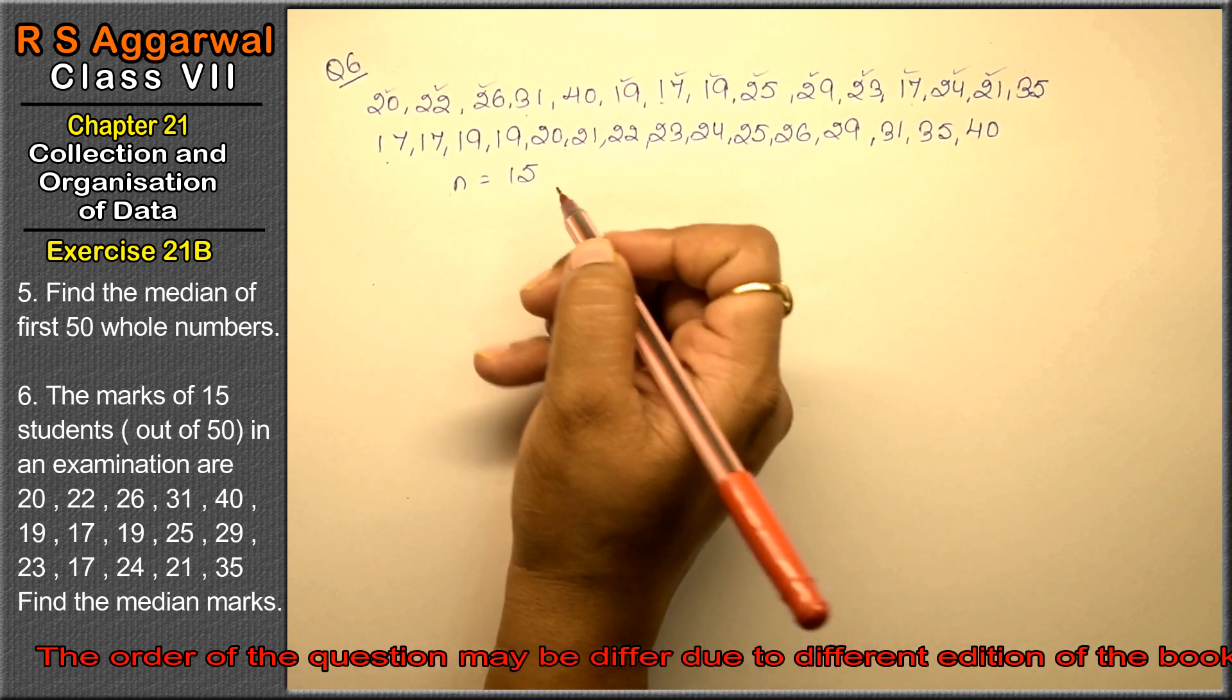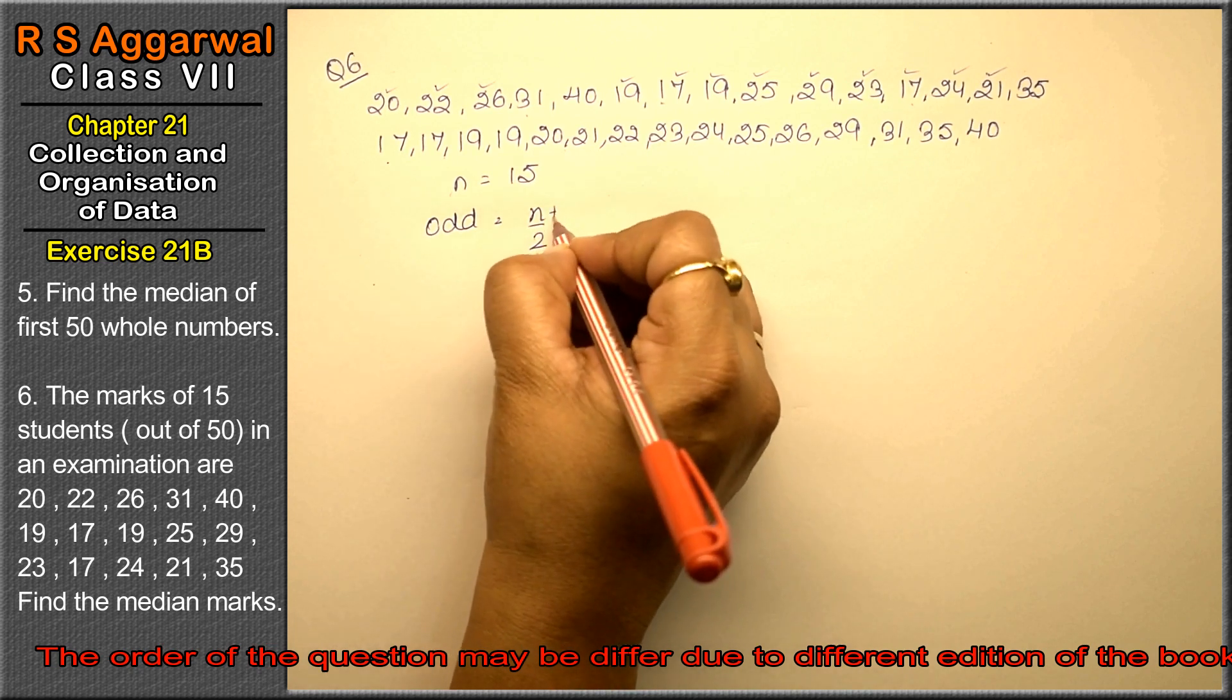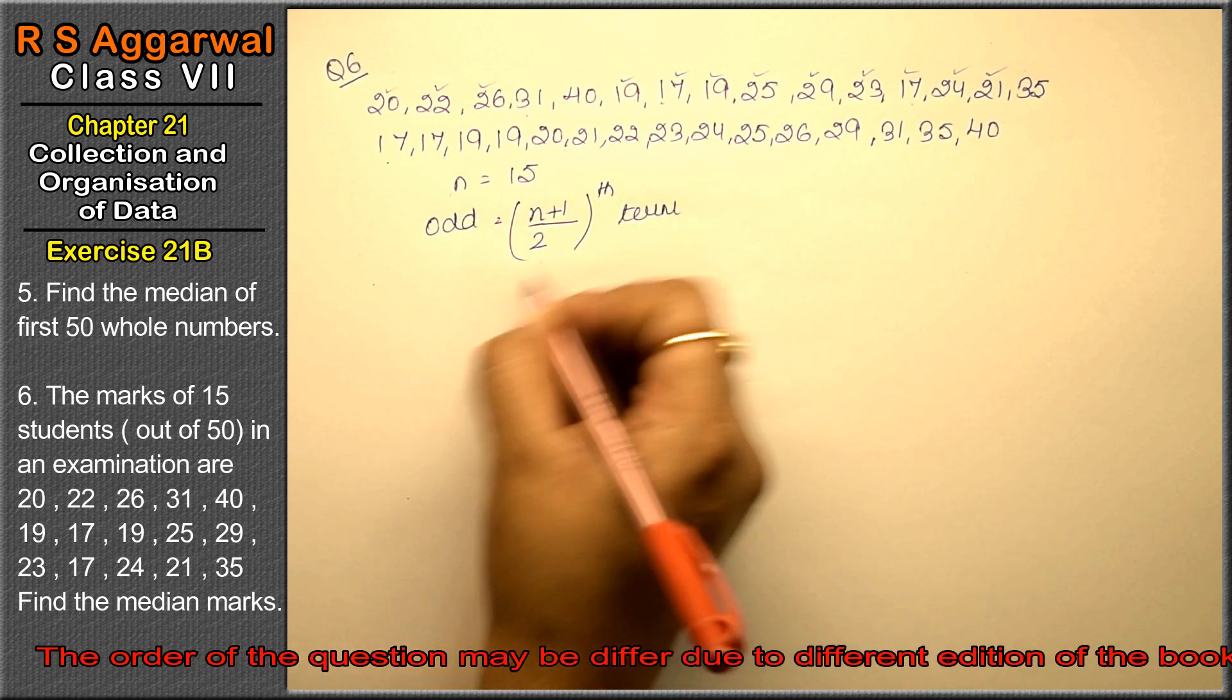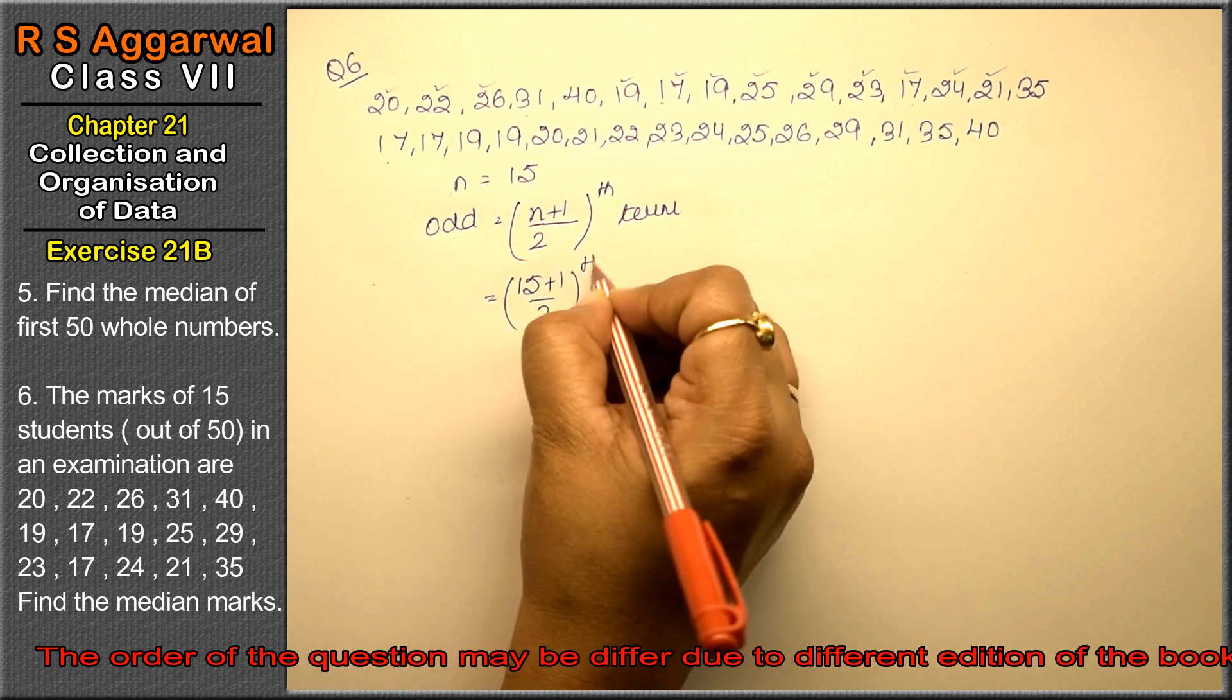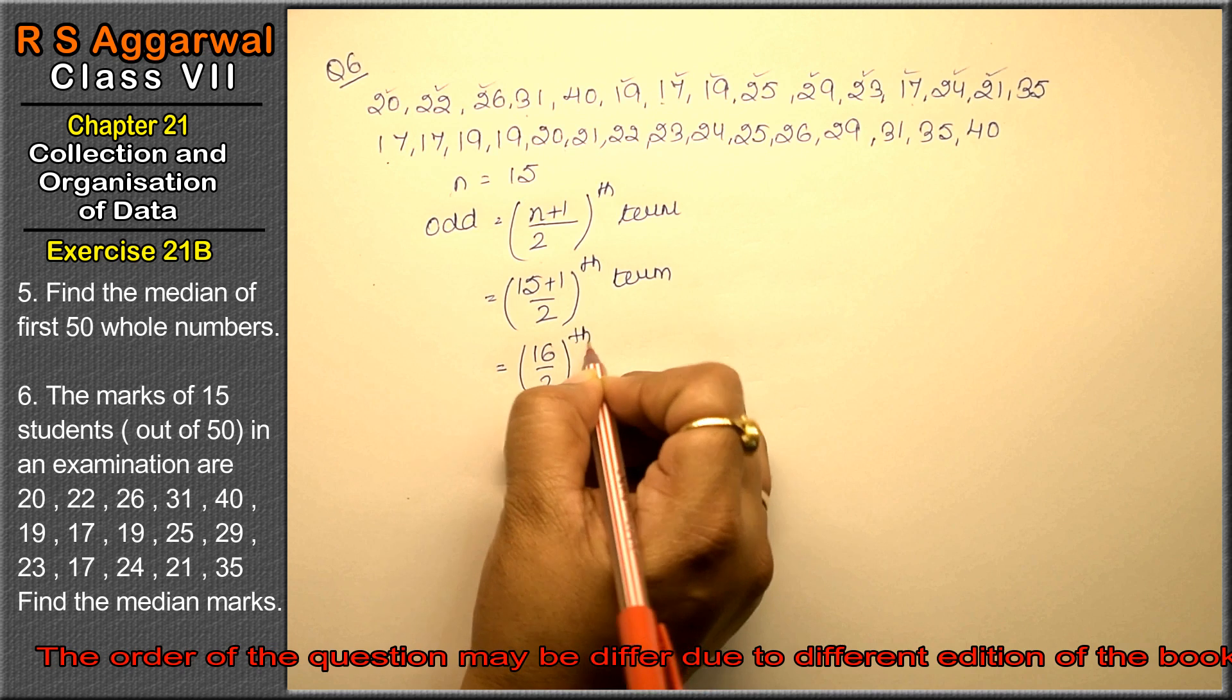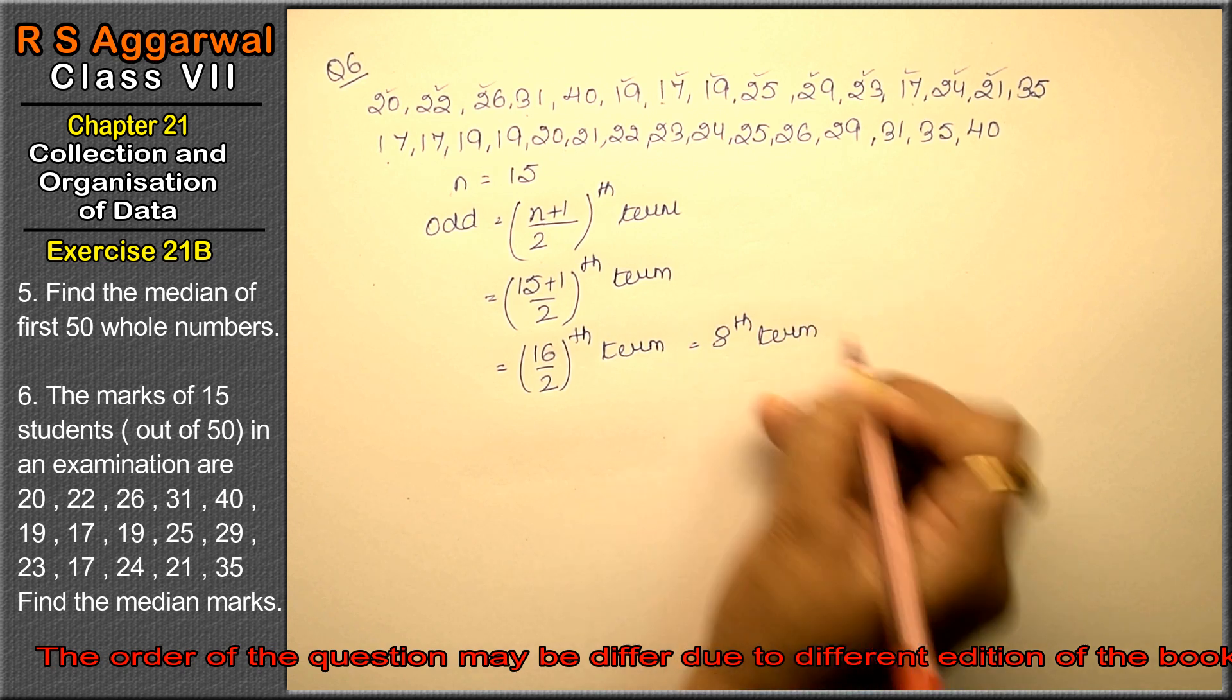15 is an odd number. In the odd case, what was it? (n+1)/2 th term. Right? So how much is it? (15+1)/2 th term. So 16/2 th term, or we can say the 8th term. Right, friends?